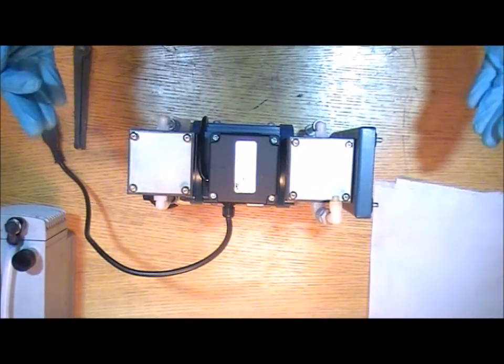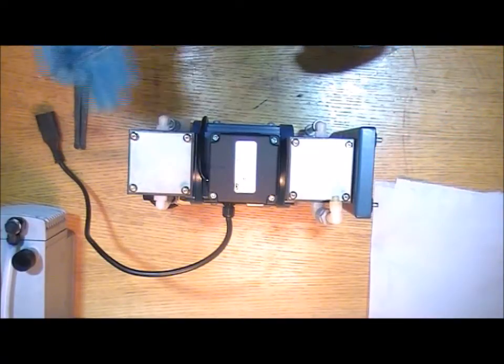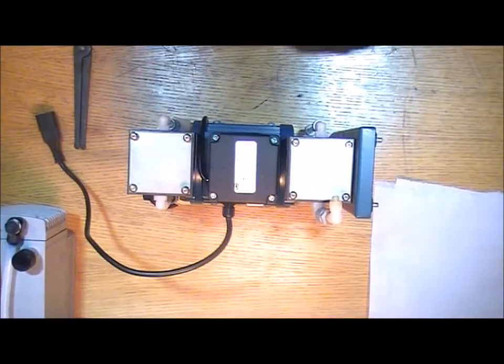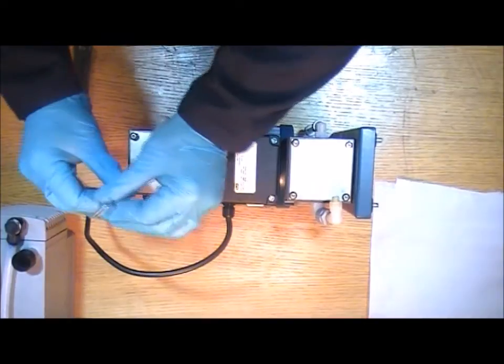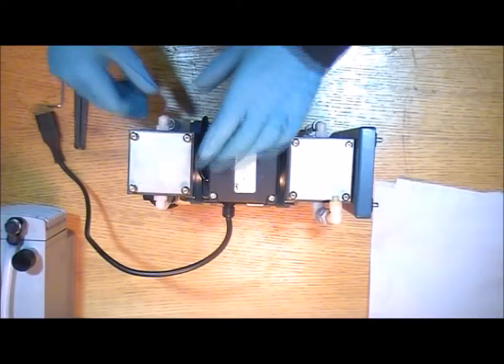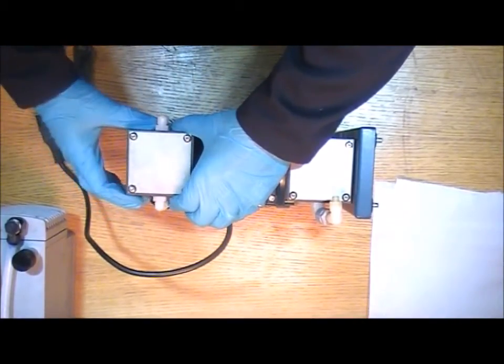So the first thing to do is to orient the pump so that the heads are lying horizontally. It's much easier to get the parts to line up that way. And then just undo the four bolts on one of the heads. It's best to do one head at a time so you don't risk muddling any of the components.